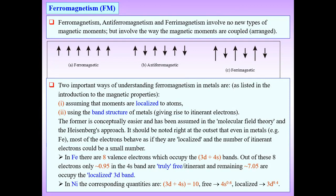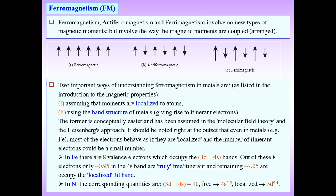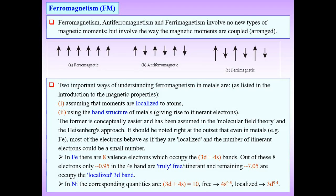The sum of these approaches is conceptually used in the molecular field theory and the Heisenberg approach. It should be noted that in a metal, most electrons behave as though they are localized, and the number of truly itinerant electrons could be a small number.